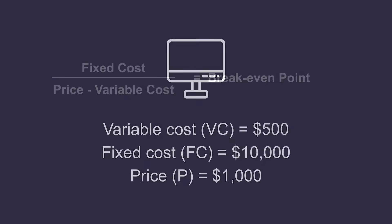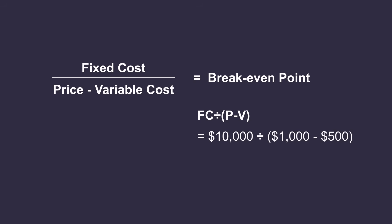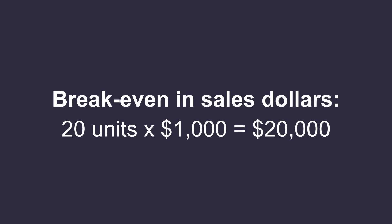The formula is pretty simple: fixed cost divided by price minus variable cost. So the breakeven units is $10,000, which is the fixed cost, divided by $1,000 minus $500, which is $500, which comes to 20 units. So you will have to sell 20 computers to just breakeven.